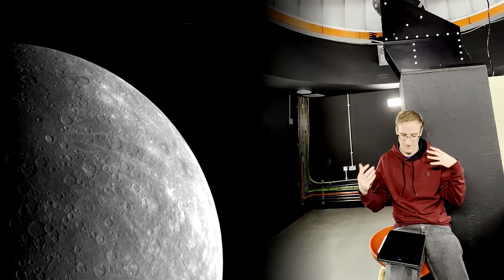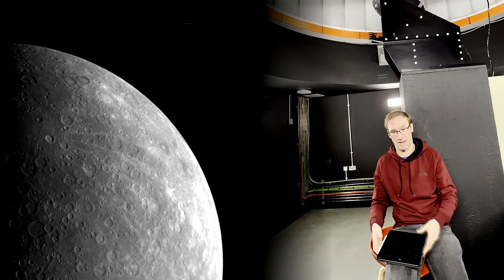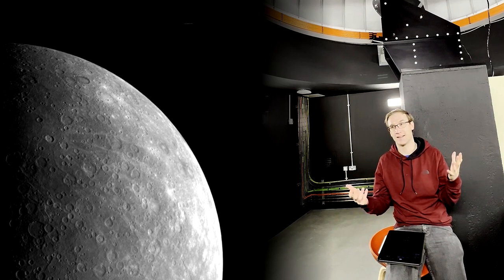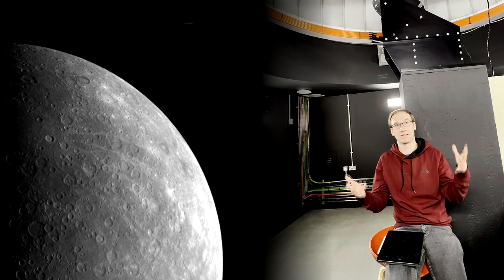Mercury is the closest planet to the Sun, so it moves the fastest through space, both in terms of its orbit and physically how fast it's moving. It takes about 88 days to go around the Sun and it moves very quickly across the sky, which is why the Romans named it after their messenger god.